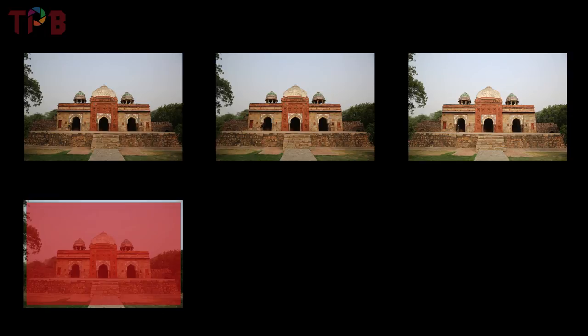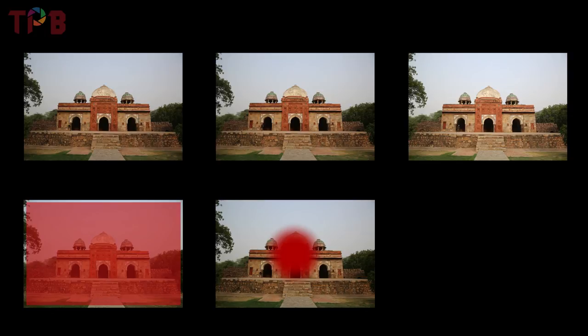Now you will see the first image — for almost right exposure, you have to click on evaluative. The second image, you have to click on center-weighted, which covers the center 20 to 25 percent of the frame area. And the third image is a little overexposed because of spot metering.